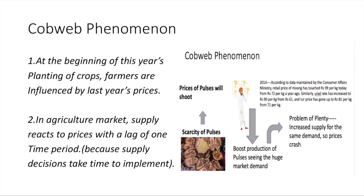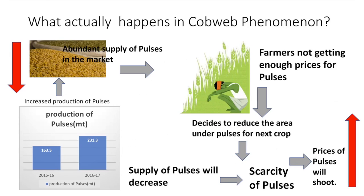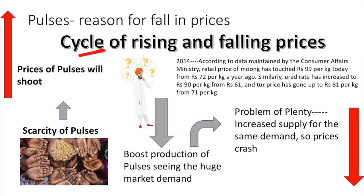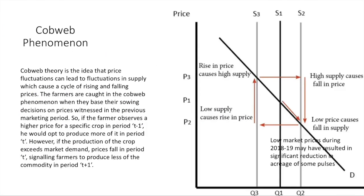What's wrong with farmers basing their sowing decisions on last year's prices? It is wrong because in the case of agricultural commodities, supply reacts to prices with a lag of one time period, because supply decisions take time to implement. In the Cobweb phenomenon, price fluctuations lead to supply fluctuations, causing a cycle of rising and falling prices.